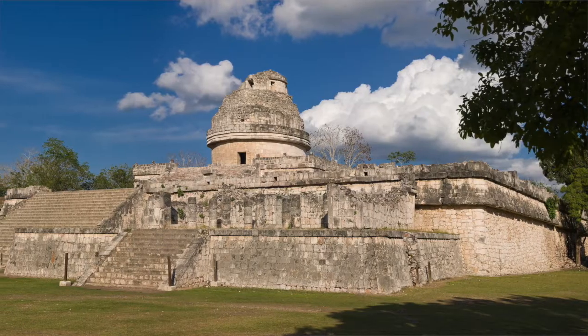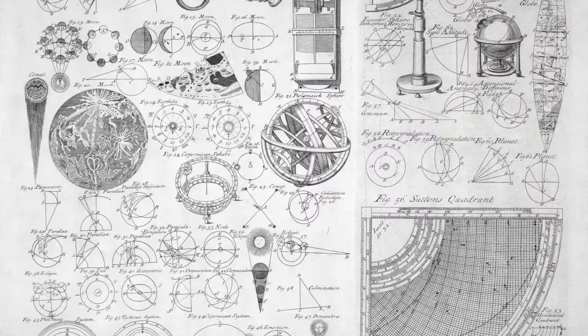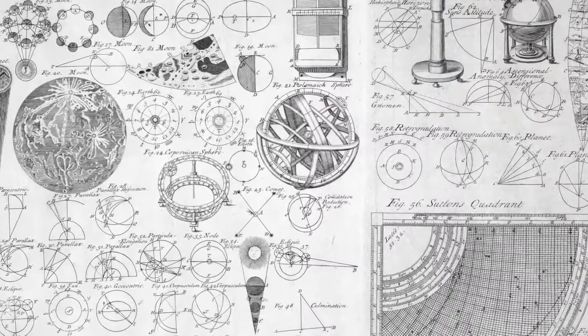Exoplanets had been theorized for a very long time. Philosophers and scientists had written about them for centuries. But the first exoplanet wasn't actually detected and confirmed until 1988. Why? What took us so long to detect exoplanets? What made detecting them so difficult?